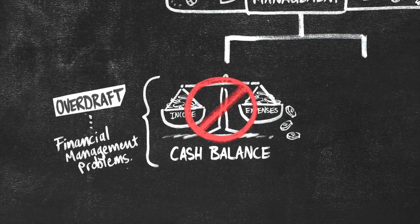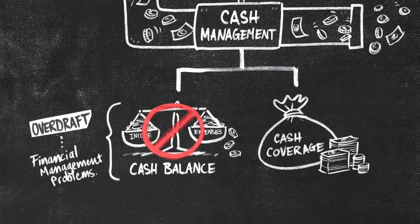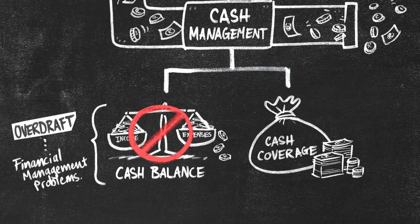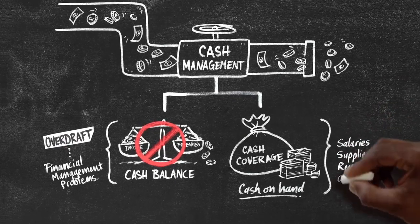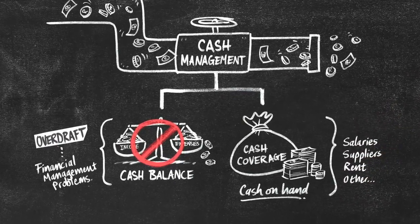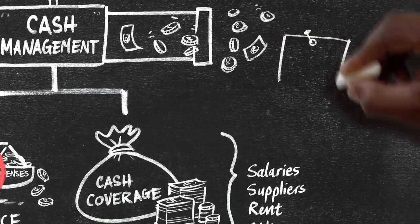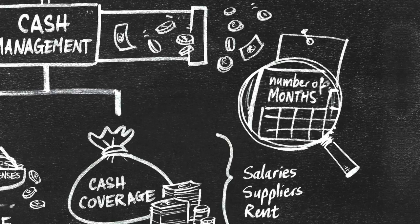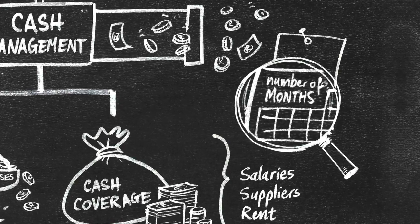The second indicator is a municipality's cash coverage. Like any business, a municipality should always have enough cash on hand to be able to pay salaries, suppliers, rent and all other expenses that it owes on a monthly basis. The cash coverage indicator measures the number of months that a municipality can pay its bills if it only uses the money it currently has in the bank.